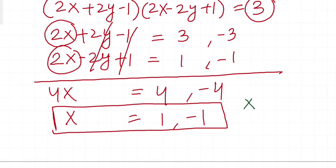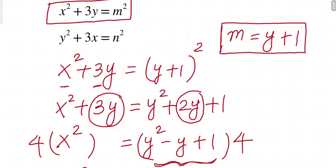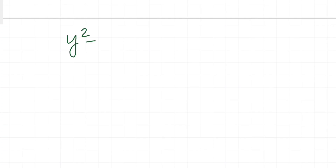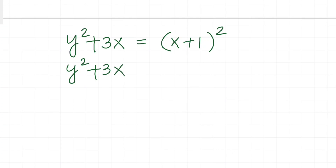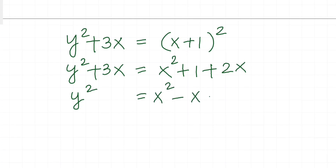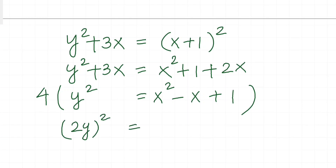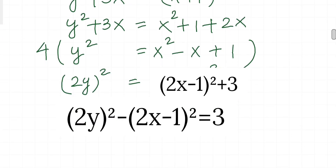So finally x = ±1. Now we repeat the same process with the second equation: y² + 3x = some square. I take x + 1 to cancel some terms on the right-hand side. So y² + 3x = (x + 1)² = x² + 2x + 1, which gives x² - x + 1 on the right.